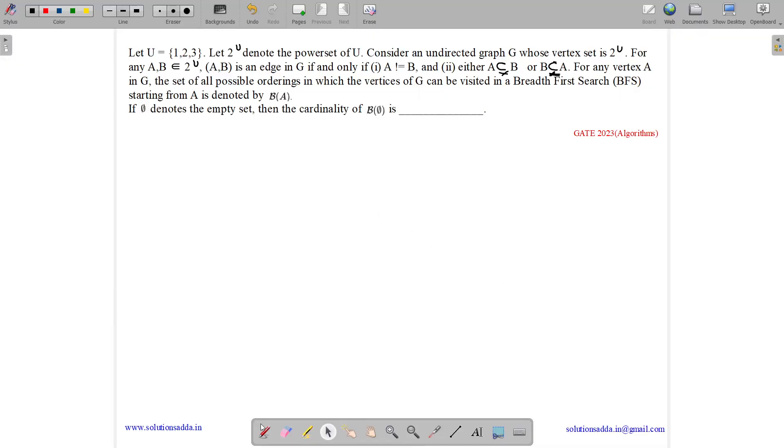This question belongs to algorithm subject and was asked in GNIT CSE 2023. The question states: let U be a set having the elements 1, 2, 3, and let 2 to the power U denote the power set of U. Consider an undirected graph G whose vertex set is 2 to the power U. So we have U equals 1, 2, 3.